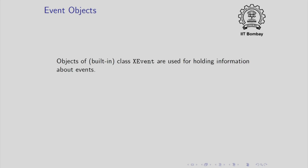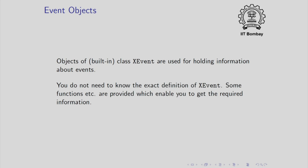In SimpleCPP, events are represented by objects. We have objects of class XEvent, which is built in, and they are used for holding information about events. You do not really need to know all the details of the class XEvent. You can look at some of its data members, which we will see shortly, and you have functions available by which you can extract information out of an XEvent object.